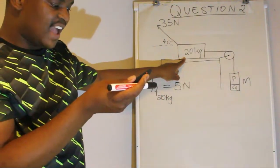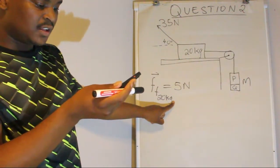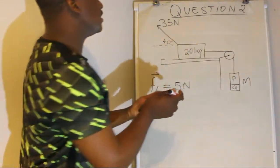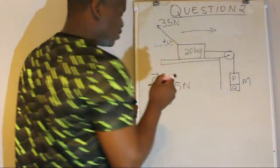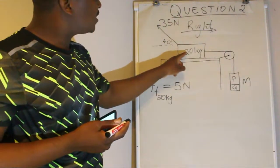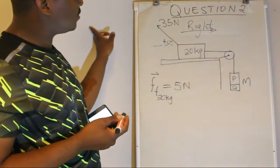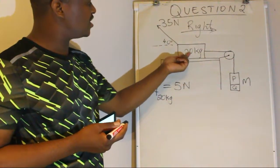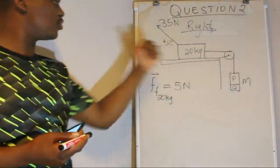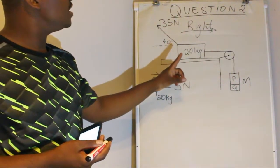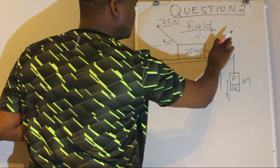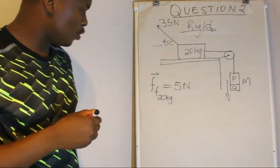The 20 kg block experiences a frictional force of 5 newtons as it moves to the right at a constant speed. The system is moving to the right in that direction. The frictional force acts to the left because friction opposes motion — if the block moves to the right, friction acts backwards. So the block on the side of P and Q goes down, the 20 kg block goes right, and friction opposes that motion.